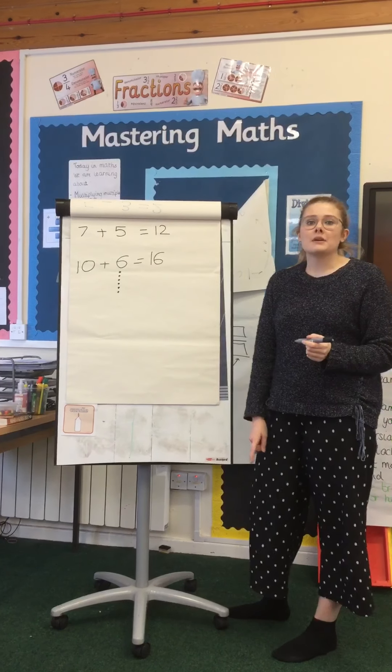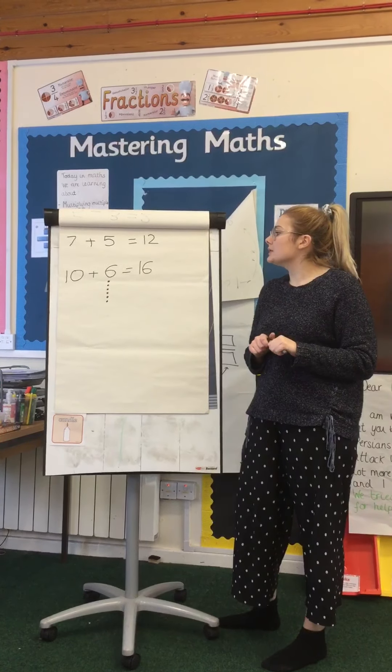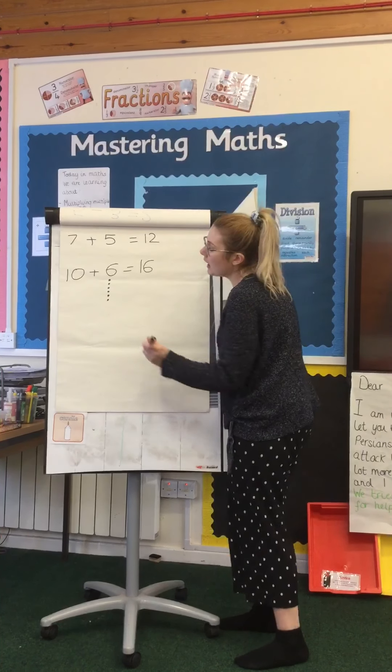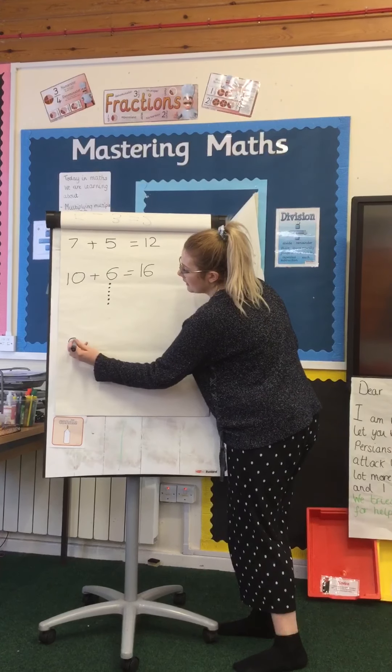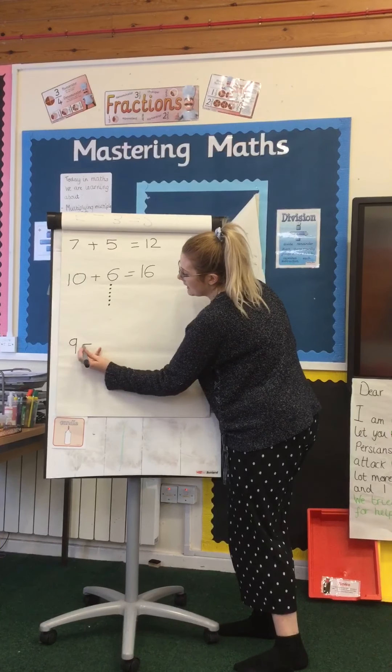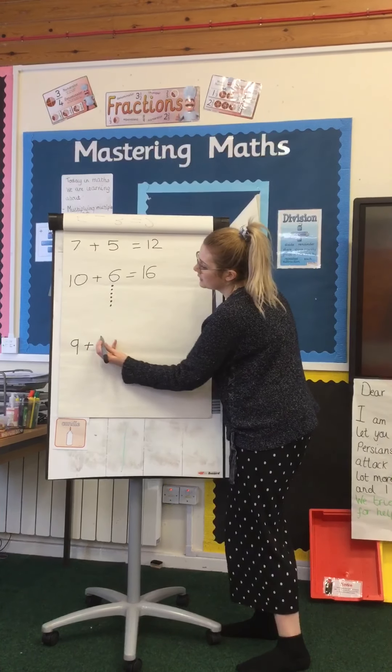Now I'm going to write a number sentence for you to do at home. Can you do 9 add 7 equals? Remember, don't draw dots under your 9, draw 7 dots under your 7, lock 9 in your head, and count on using your dots. Then you'll know what the number sentence equals.